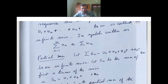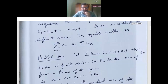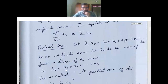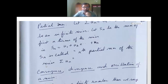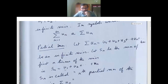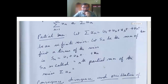Now the partial sum. Let sigma un equal u1 plus u2 plus u3 and so on to infinity — this is an infinite series. Let Sn be the sum of the first n terms of the series, that is Sn equals u1 plus u2 plus u3 till un. Sn is called the nth partial sum of the series sigma un.